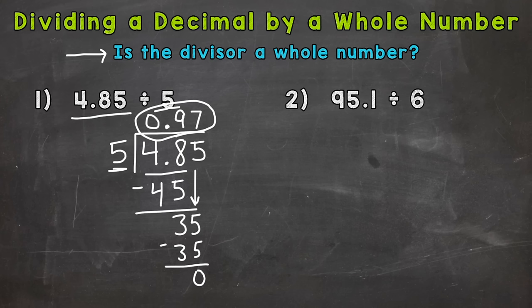Now number 2 is going to be a little bit different than number 1. So please stick around for number 2, and you'll see why towards the end of the problem. But the setup is the same. So 95 and 1 tenth is our dividend. It goes underneath our division bar. It's the number being split up or divided. 6 is our divisor. So it goes on the outside here.